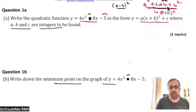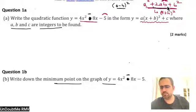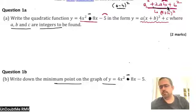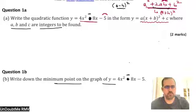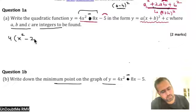Try the same question with 4x squared minus 8x minus y. If you take 4 common from both the first two terms, it will be x squared minus 2x — because when 4 goes back in, you should get 8x only. If you write 4x, then 4 times 4x will become 16x.